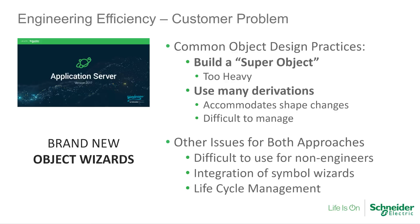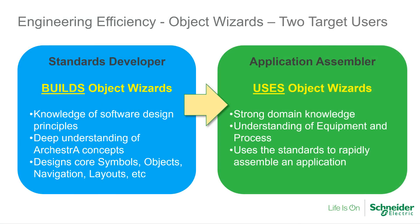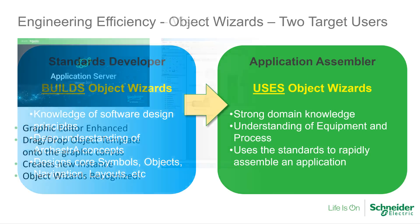When modeling their plant, customers sometimes struggle to create a flexible template which accurately reflects their wide array of equipment, yet also accommodates future growth and changes. Application Server 2017 solves this by introducing object wizards. Built by standards developers and used by application assemblers, object wizards allow customers to codify their equipment capabilities, including attributes, operational logic, and graphics in a single, flexible, highly performant template. Best of all, the resulting template provides maintenance users an easy wizard-based workflow to create or update equipment instances.